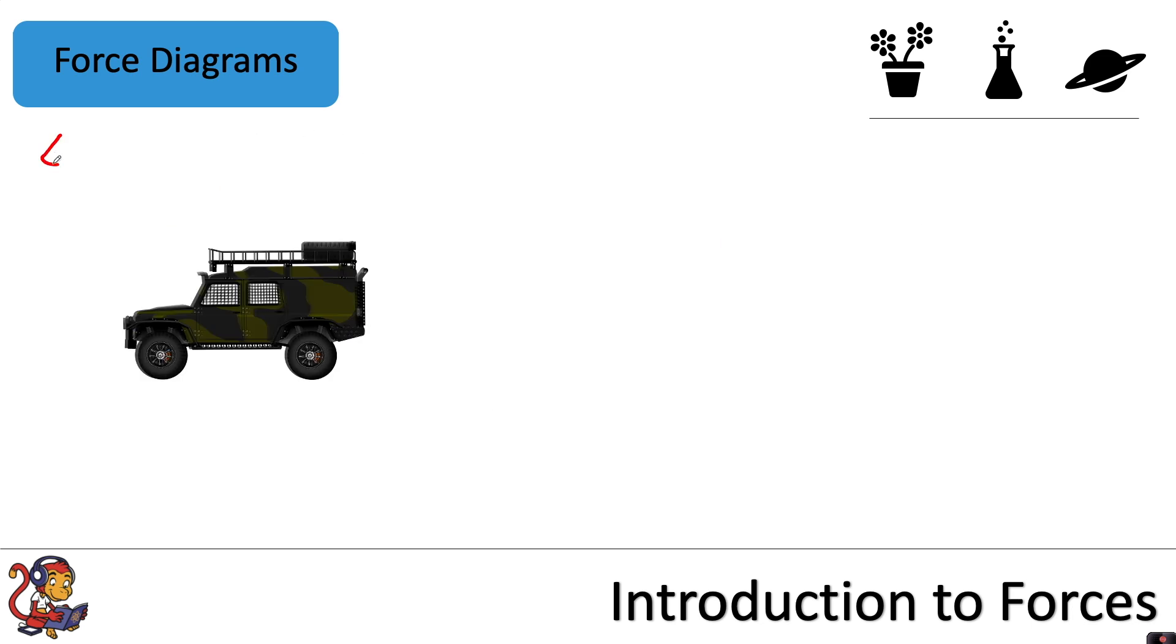On this Jeep here, let's assume the Jeep is moving along in this direction. It would have weight acting downwards, a normal contact force acting upwards. So I've just shown this by one arrow, but you may have drawn one arrow on each of the tyres there, to show where those forces are acting. You've got friction, which is a force experienced between two objects that are rubbing together. So between the tyres and the road, you would have friction. You've got drag that is pulling the vehicle back. Again, you might have written air resistance for that. That's also fine. And you've got thrust that's pushing the vehicle forwards.